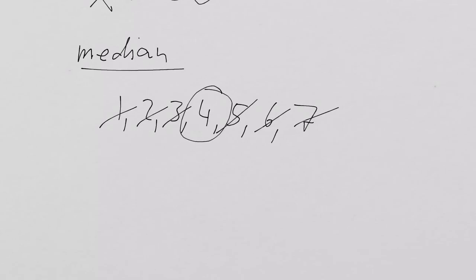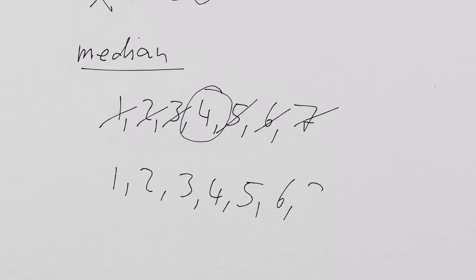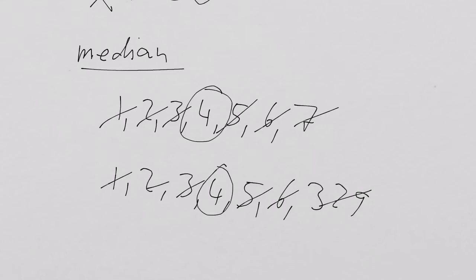Is the median sensitive to outliers? With 1, 2, 3, 4, 5, 6, 329 — we still have the same median. So the median is not sensitive to outliers.